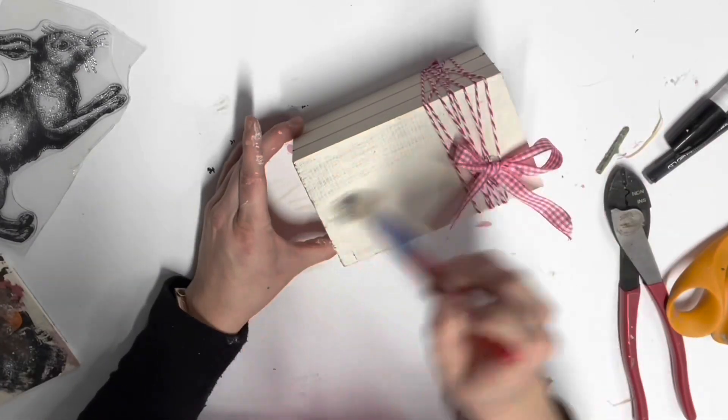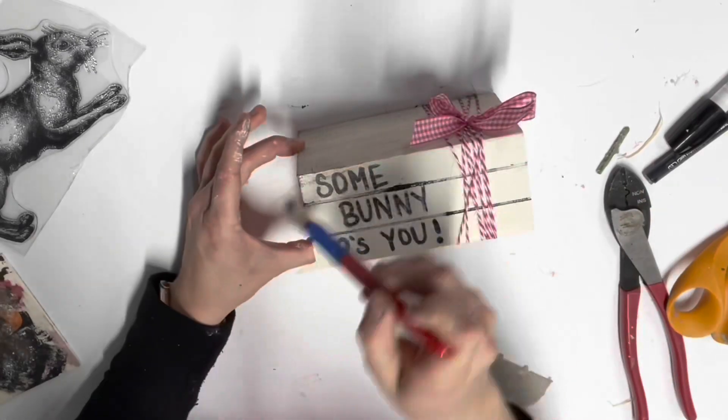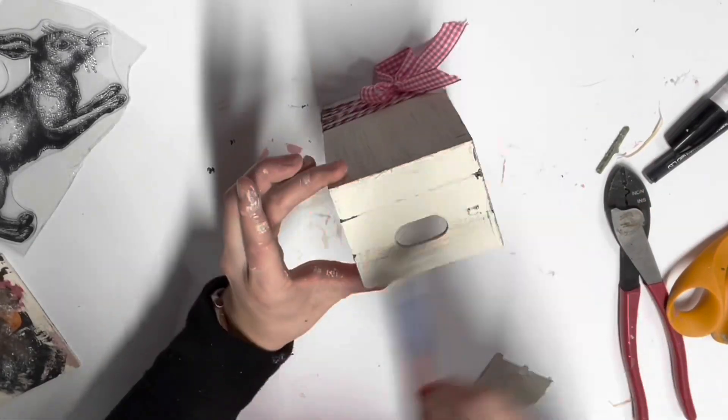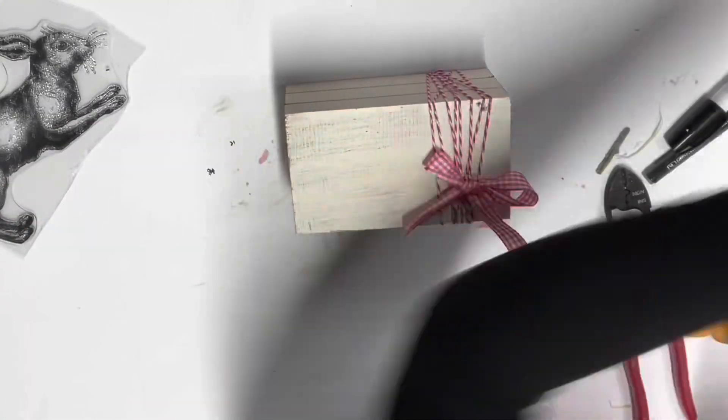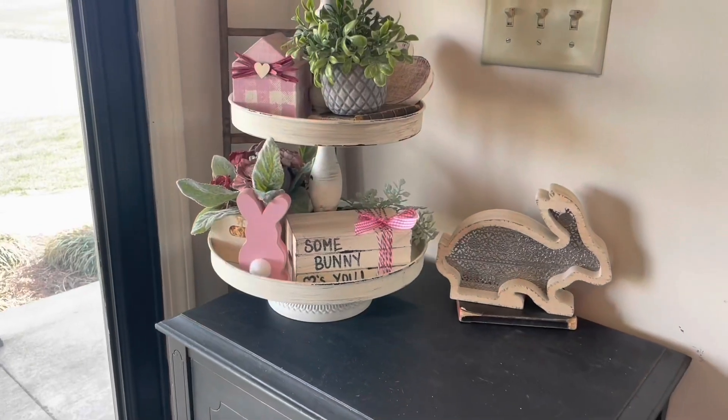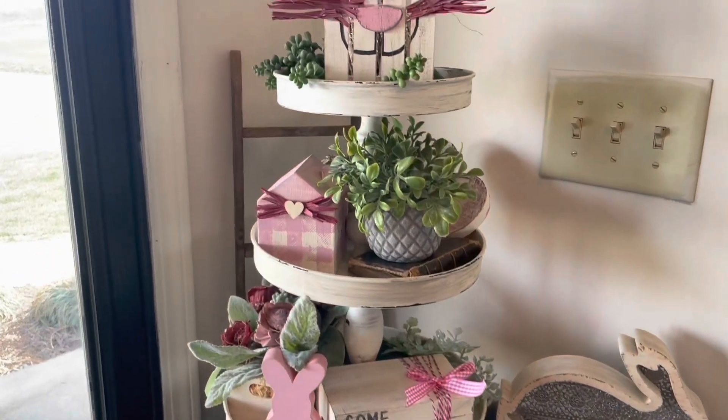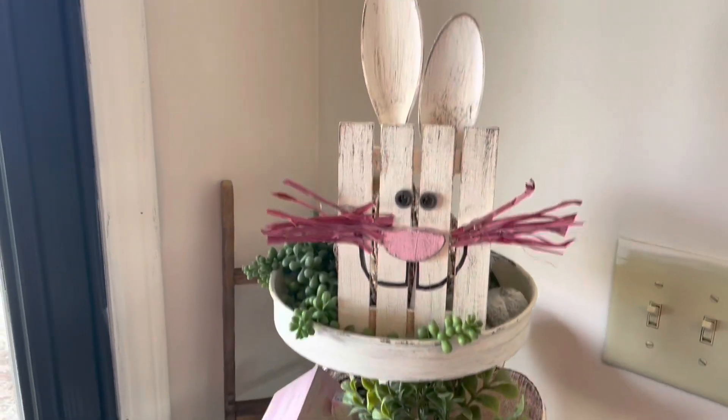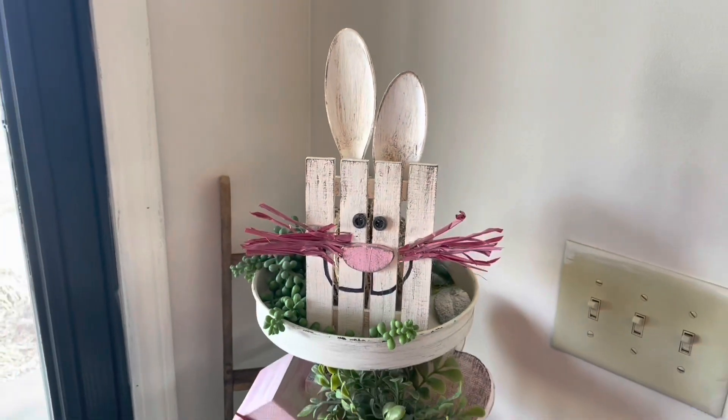And then I just dry brushed it with some brown paint. Of course, you know, I'll have to make it look antique-like. Okay guys. And then here's a look at how this whole tier tray turned out with everything together. And I'm actually kind of obsessed with this. I don't know why I like this stuff so much, but anyway, I love it. I think it's so cute, but here is a look at the whole thing.